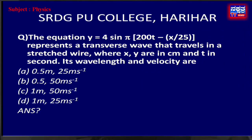The first question: the equation y = 4 sin π(200t − x/25) represents a transverse wave that travels in a stretched wire, where x and y are in centimeters and t in seconds. Its wavelength and velocity are: option a) 0.5 m and 25 m/s, option b) 0.5 m and 50 m/s, option c) 1 m and 50 m/s, option d) 1 m and 25 m/s. Which is the correct option?